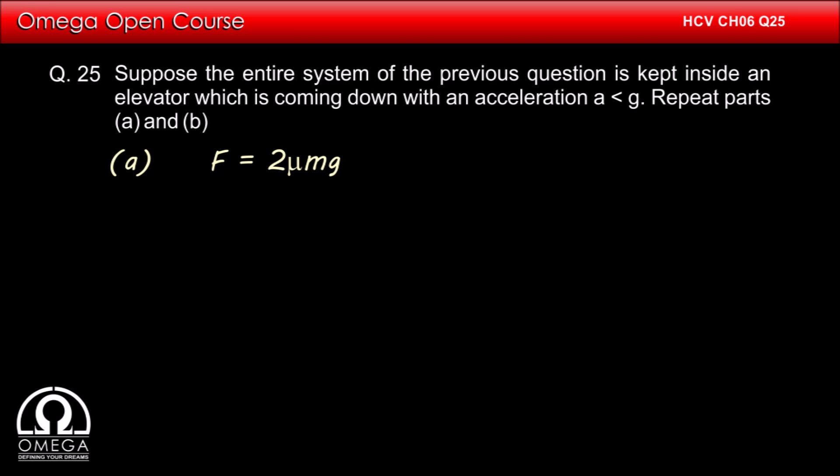From solution of question number 24, we have f is equal to 2μmg. From our discussions on equivalent gravity, we know that the elevator descending with acceleration a is equivalent to a system at rest with acceleration due to gravity equal to g minus a.